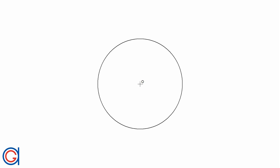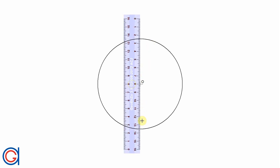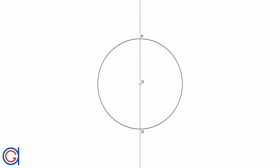So here we can see the given circle in the center of our screen. The first thing we are going to do with a ruler is draw a vertical diameter and elongate it on both sides.